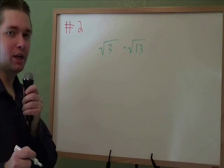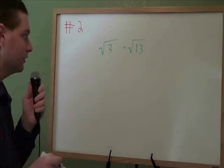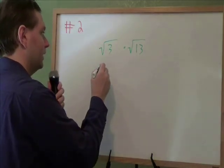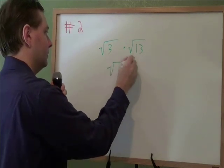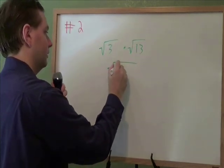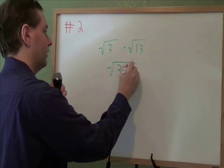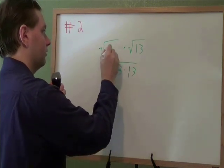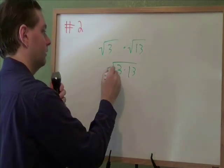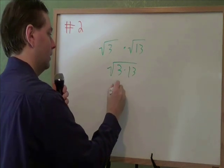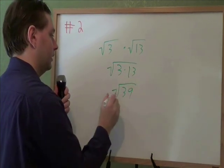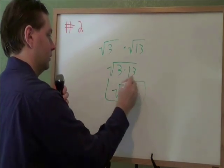Square root of 3 times square root of 13. For this problem, we have to remember one of our square root rules, which is when you are multiplying two different square roots, you can combine them and just multiply on the inside. Square root of 3 times square root of 13 is square root of 3 times 13, which is 39. And that is our answer.